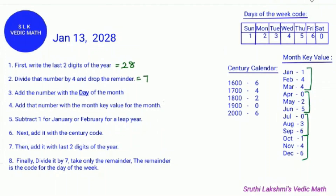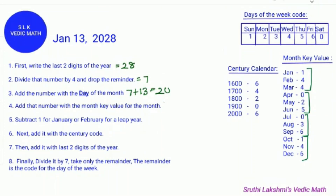Next, it says to add that number with the day of the month. So we do 7 plus the day of the month, which is 13. So 7 plus 13 equals 20.